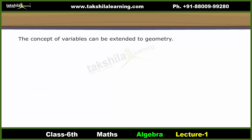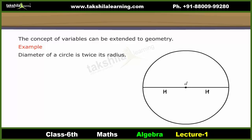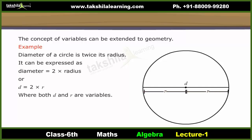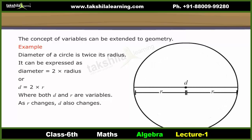Geometric concepts and variables: The concept of variables can be extended to geometry. For example, the diameter of a circle is twice its radius. It can be expressed as diameter equals 2 into radius, or d equals 2 into r, where both d and r are variables. As r changes, d also changes. Let us use variables to express perimeters and areas.